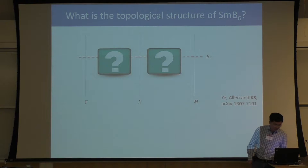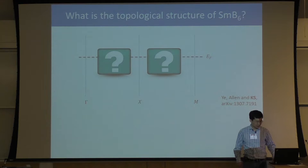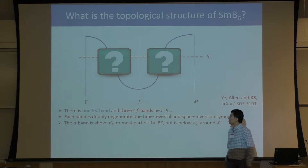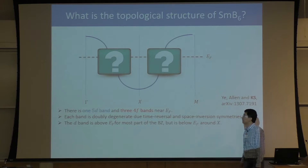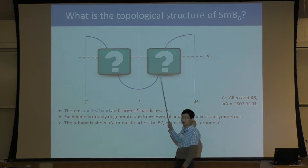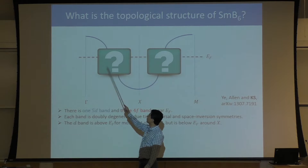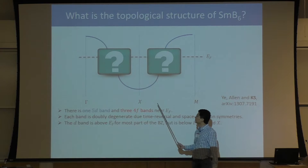The band structure of SMB6 is not totally understood, but we do know a lot. There are four bands near the Fermi energy — one D band from the conducting electron, and the interaction effect is very weak. In the 70s, people already got this band structure correct with very high accuracy. For most of the Brillouin zone, the D band is above the Fermi energy, but if we go to the X point, the energy of this D band is below the Fermi energy.